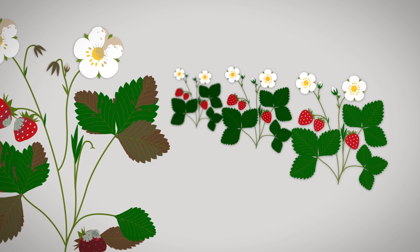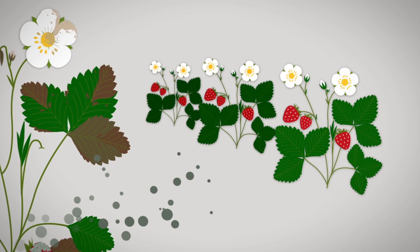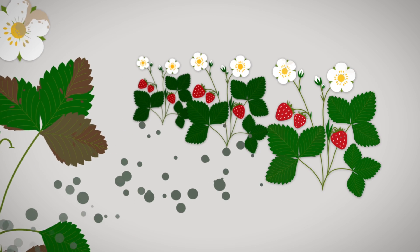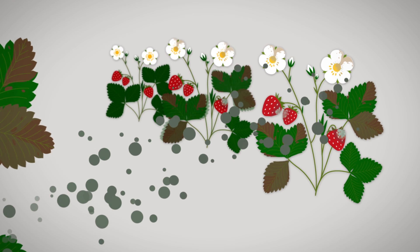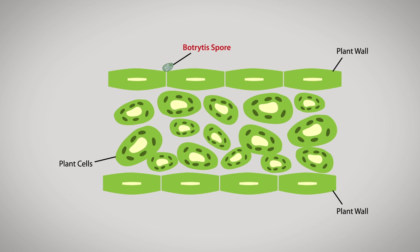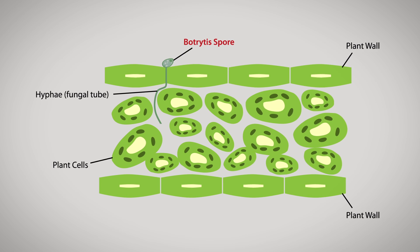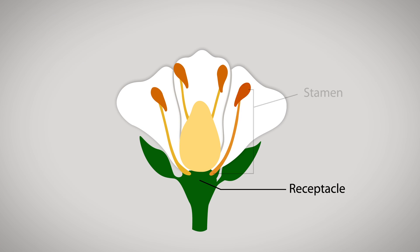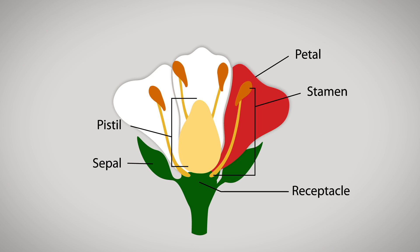The flowers of strawberry crops are commonly infected by spores that have been dispersed from nearby foliage. Once deposited on the flowers, the spores germinate and form fungal tubes, or hyphae, which can invade flower parts such as stamens, pistils, sepals, and petals.